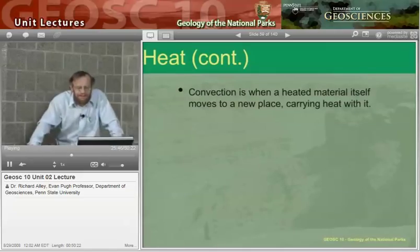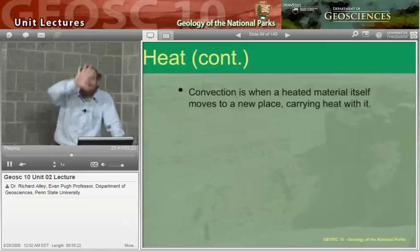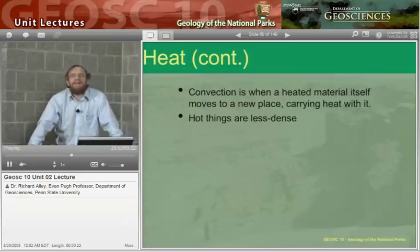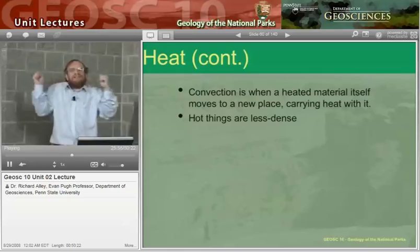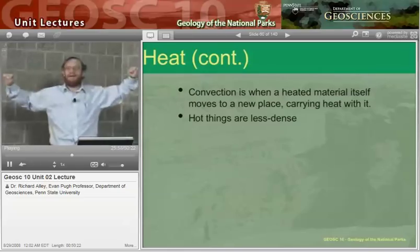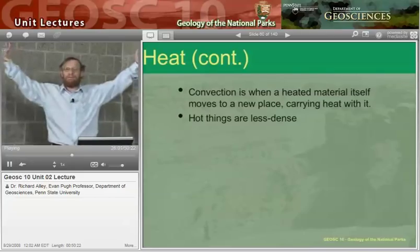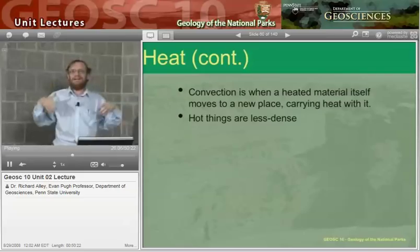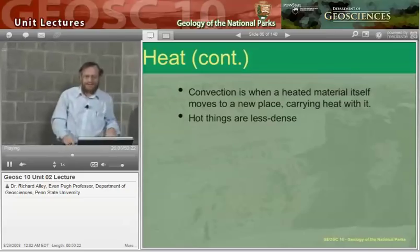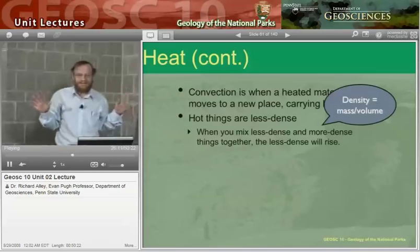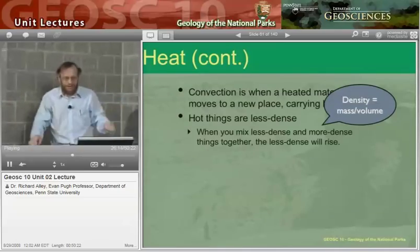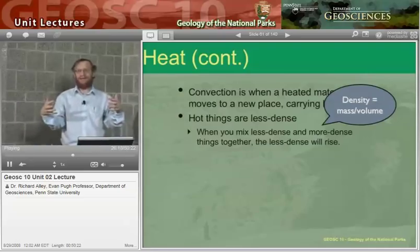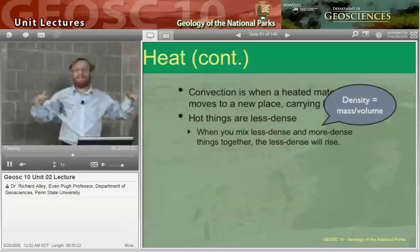Convection: heated material moves to a new place carrying the heat with it, primarily because hot things are less dense. The vibration as you heat it up shakes around more, shoves neighbors away — now you've got the same amount of stuff taking up more space. It's less dense, so it tends to rise. Density is mass divided by volume. If you have a low-density thing down, it tends to rise; if you have a high-density thing up, it tends to sink, and they get organized.